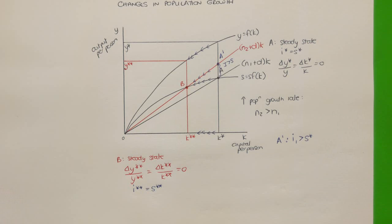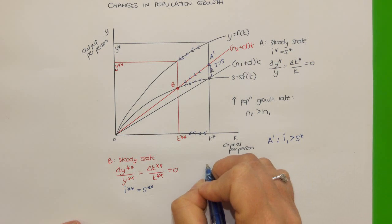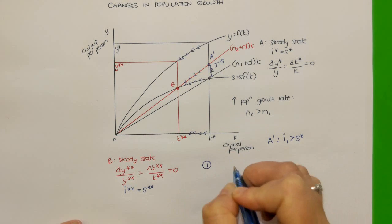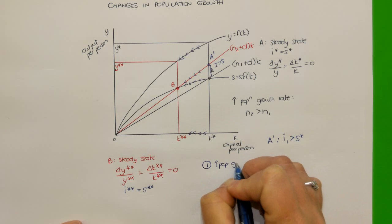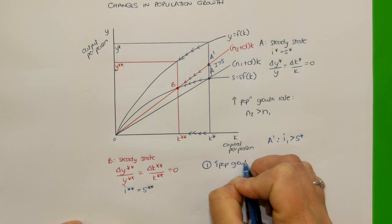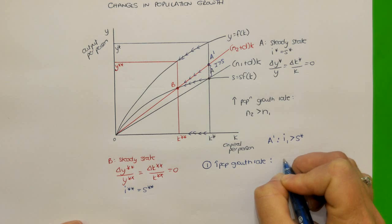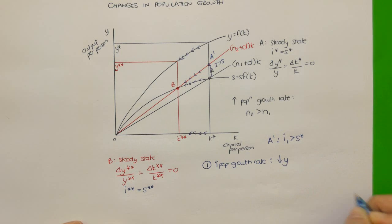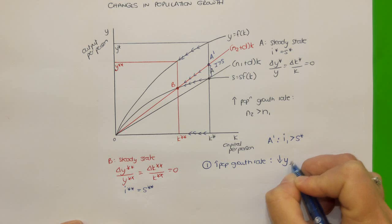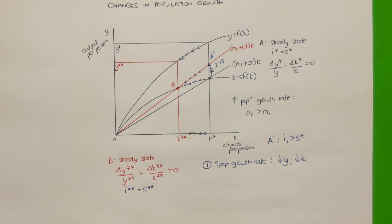So what can we take away from this? Well, there are two things. The first is that an increase in the population growth rate will lower the steady state level of output per person, and it will also lower the steady state level of capital per person.